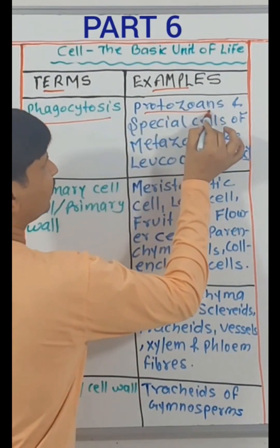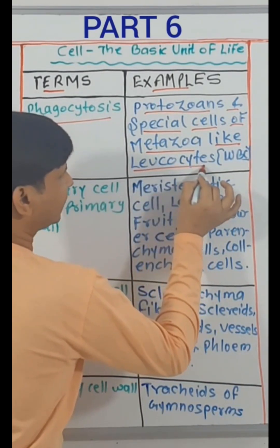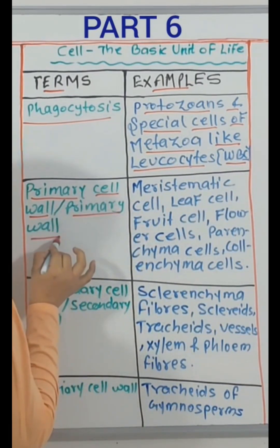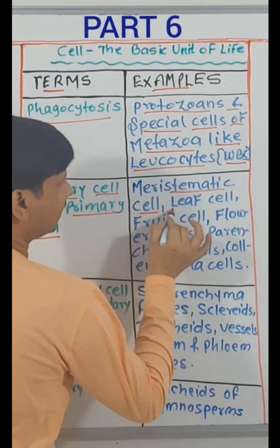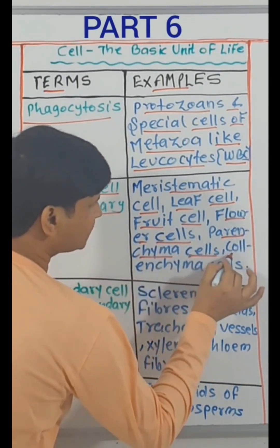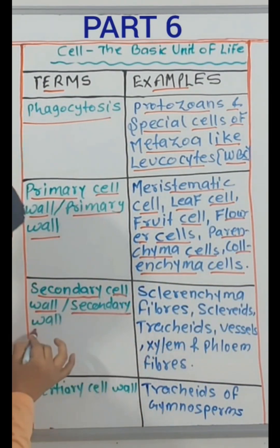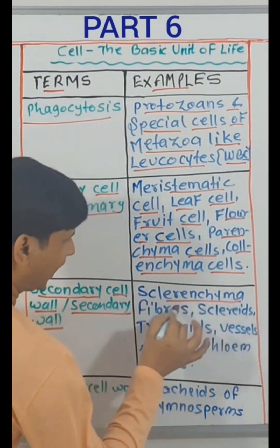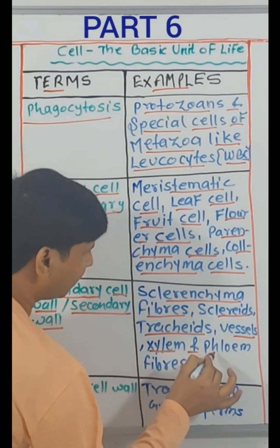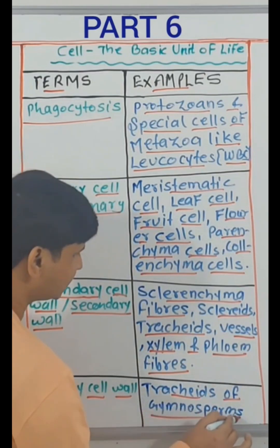Phagocytosis — protozoans and special cells of metazoa like leukocytes, that is WBC. Primary cell wall — meristematic cells, leaf cells, fruit cells, flower cells, parenchyma cells, collenchyma cells. Secondary cell wall — sclerenchyma fibers, sclereids, tracheids, vessel cells, xylem and phloem fibers. Tertiary cell wall — tracheids of gymnosperms.